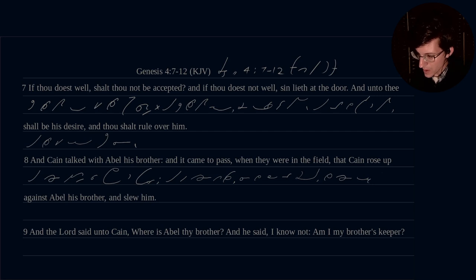When they were in the field that Cain rose up. Rose. Rows. Up. Rows. Against Abel his brother. Again. I think just against. Against Abel. Against Abel. His brother. And slew him.